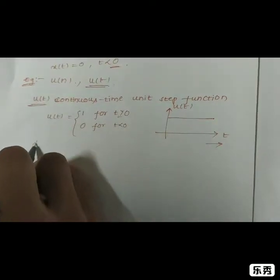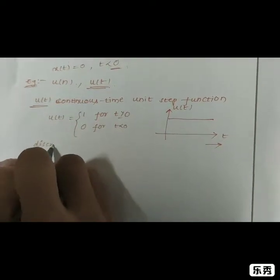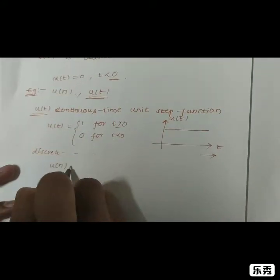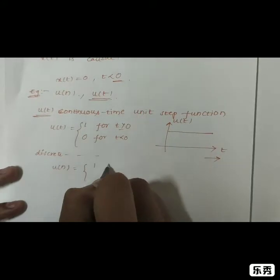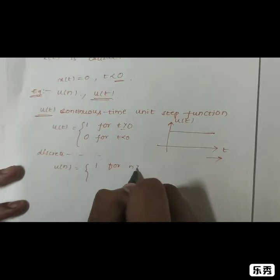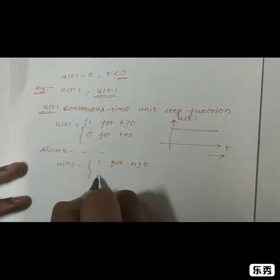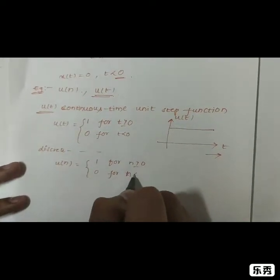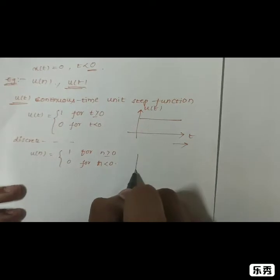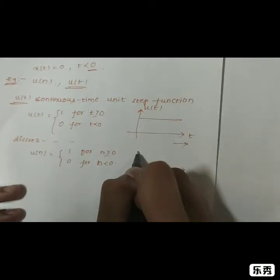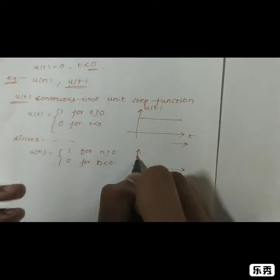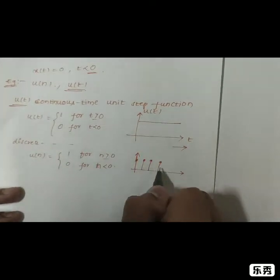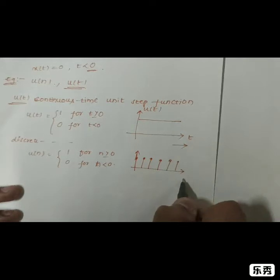For the discrete-time unit step function, u(n) equals 1 for n greater than or equal to 0, and 0 for n less than 0. The graph comes out to be for discrete values.